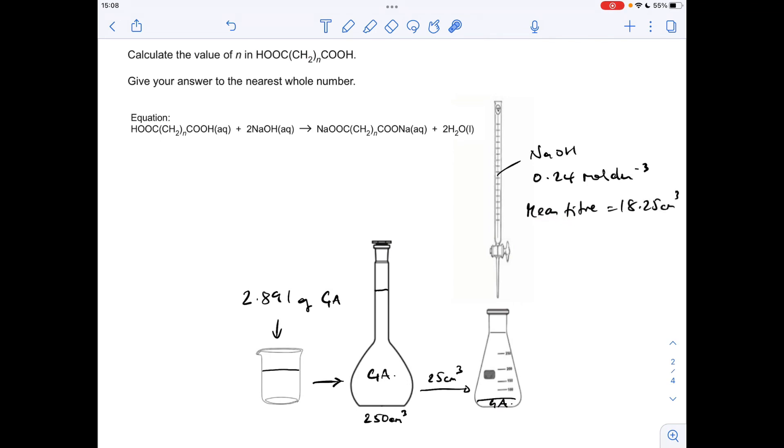We calculated in the previous question the mean titer was 18.25 centimetres cubed, so the first thing I'm going to do is work out the moles of sodium hydroxide that was used in the titration. Concentration times volume, but remember that's got to be in decimetres cubed. So that's coming out at 4.38 times 10 to the minus 3 moles. Now going to use the ratio, the mole ratio in the balanced equation, so you can see we know that, we want to know how many moles of acid we've got in here. Well it's going to be half as many. That's coming out there at 2.19 times 10 to the minus 3.